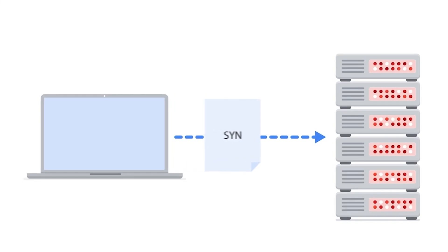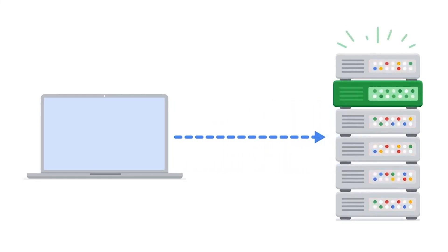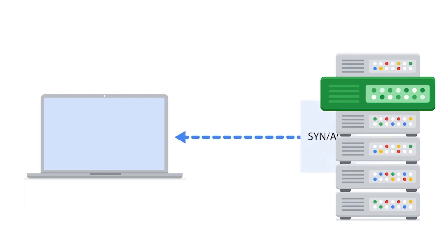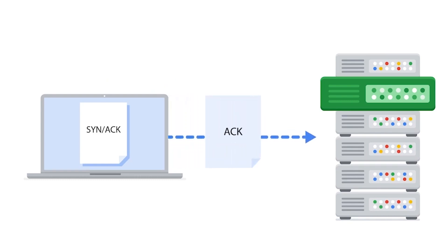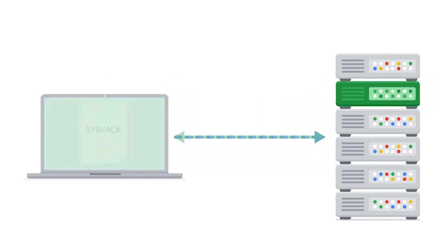Let's take a closer look at the handshake process used to establish a TCP connection between a device and a server. The first step in the handshake is for the device to send a SYN, or synchronize, request to the server. Then the server responds with a SYN-ACK packet to acknowledge the receipt of the device's request and leaves a port open for the final step. Once the server receives the final ACK packet from the device, a TCP connection is established. Malicious actors can flood a server with SYN packet requests, and if the number of SYN requests is larger than the number of available ports on the server, the server will be overwhelmed and become unable to function.